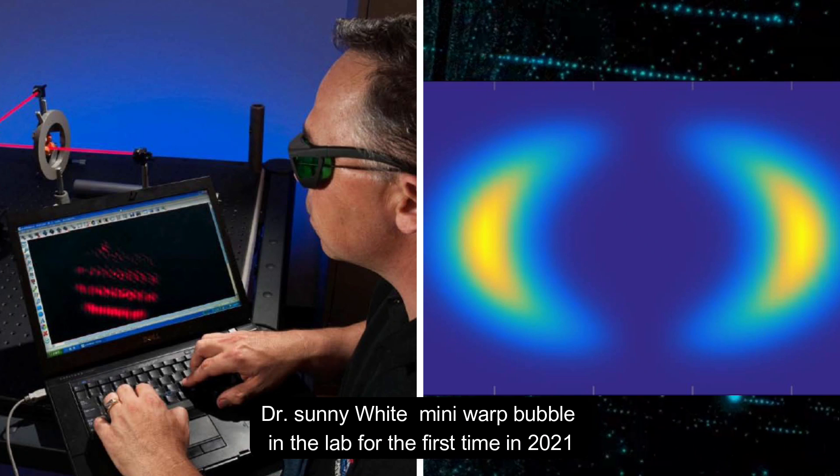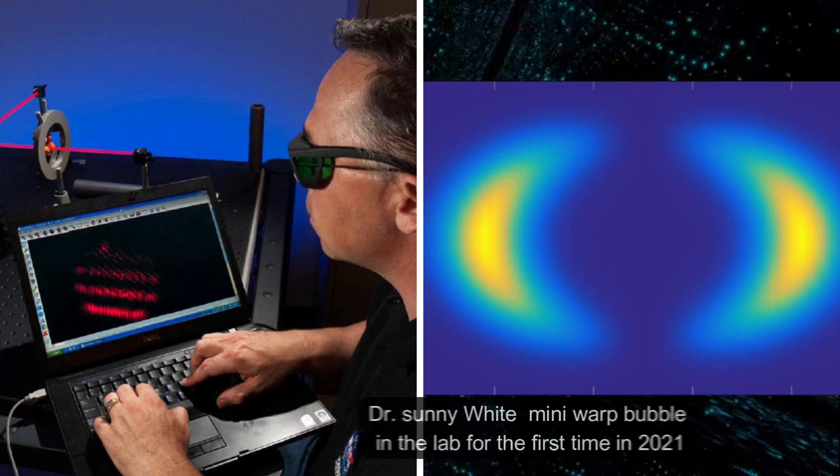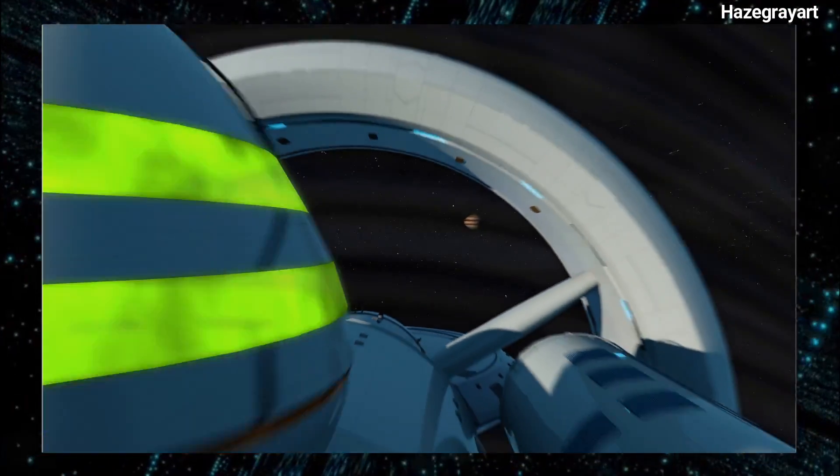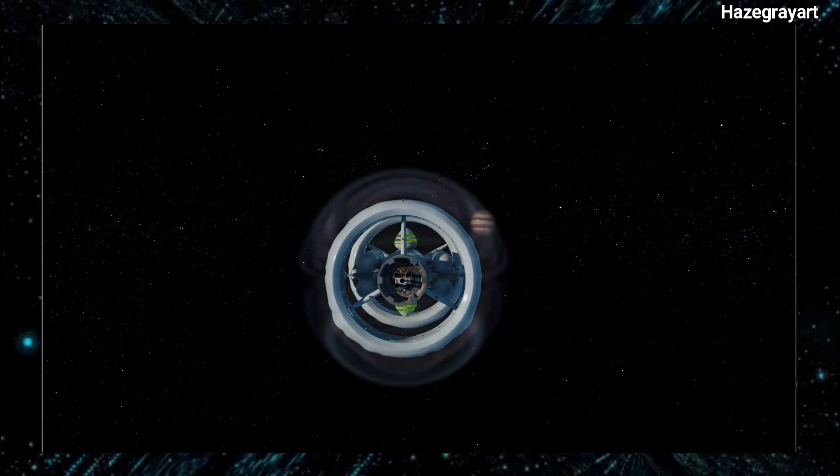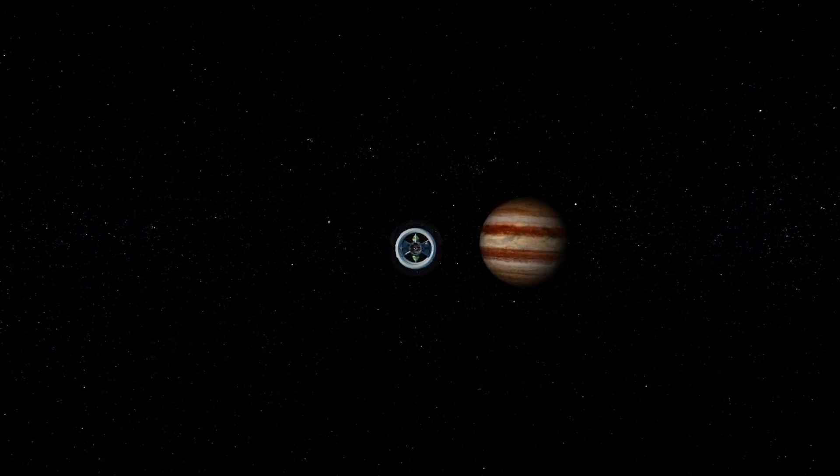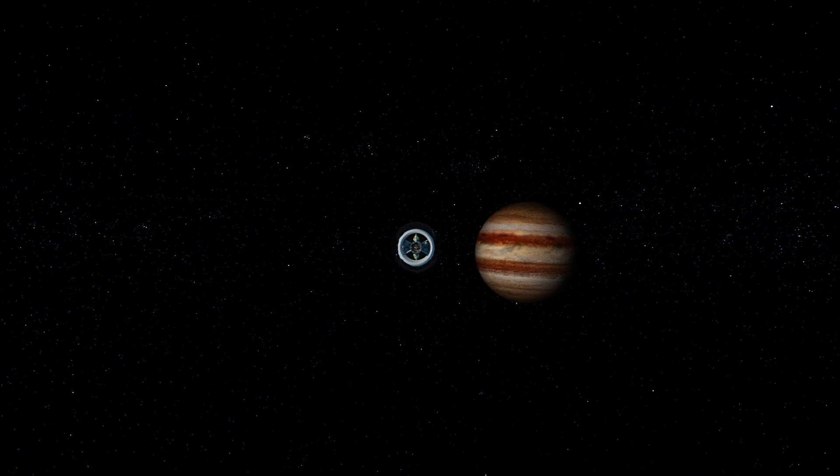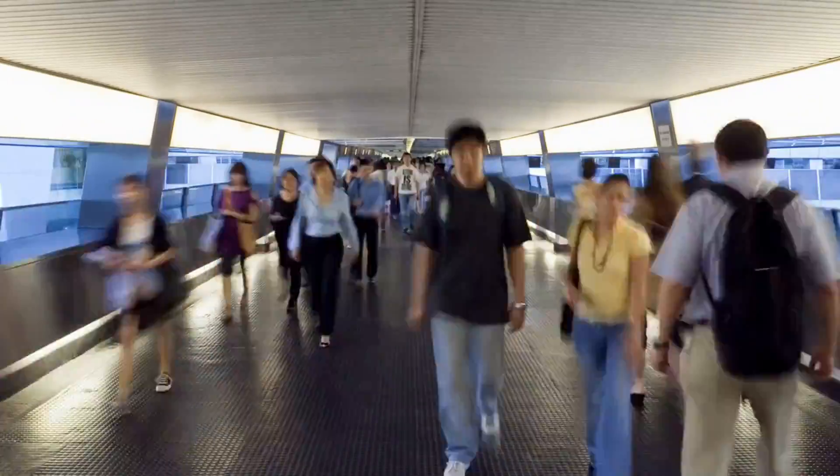Dr. White and his team created a mini warp bubble in lab for the first time in 2021. If the phenomenon exists on a small scale, it is very likely that it also exists on a larger scale. Albert Einstein suspected that the vacuum, or nothingness of space, is permeated by a force so small that it is difficult to measure. He believed that this force possessed enormous energy potential that humans had yet to comprehend.